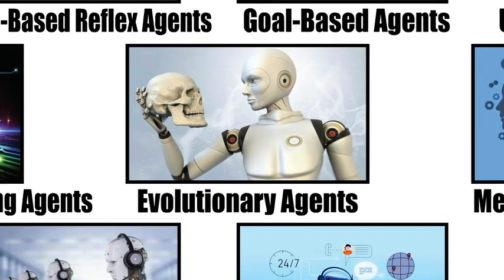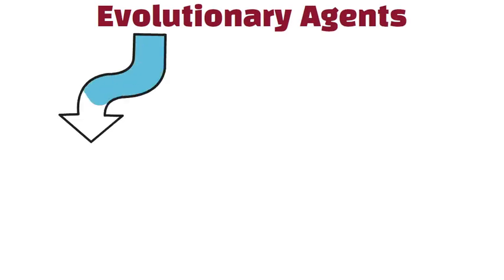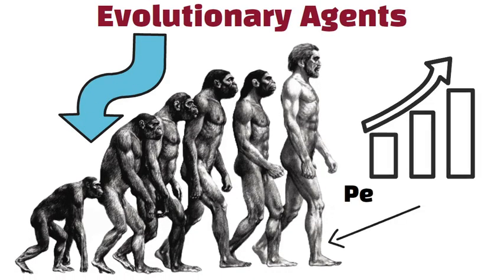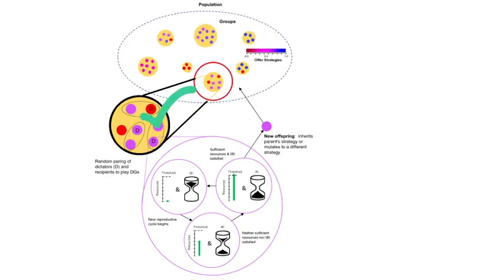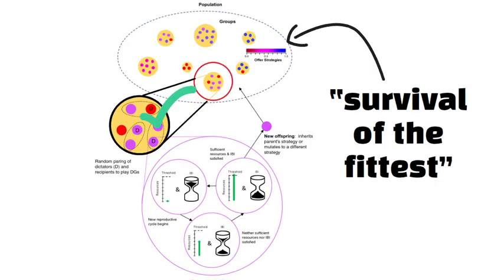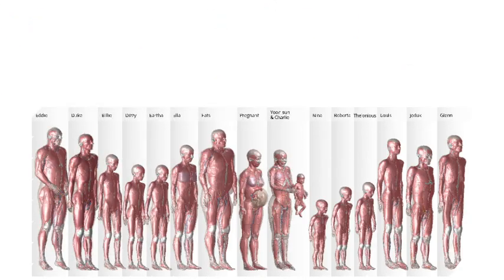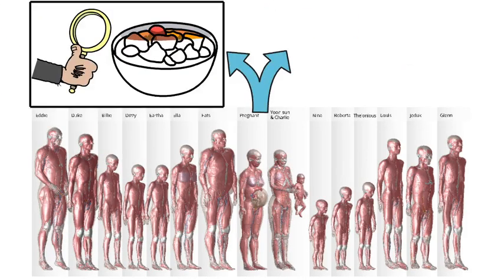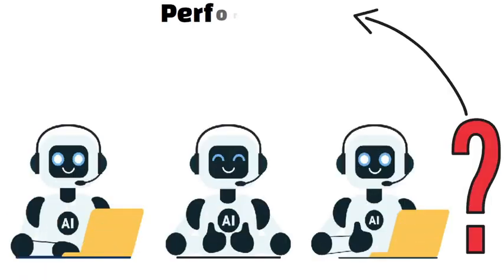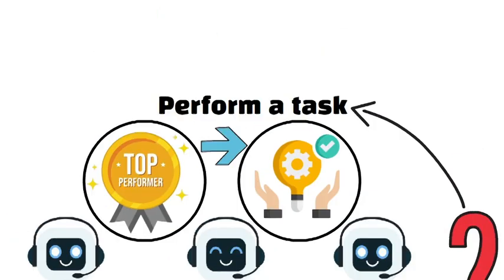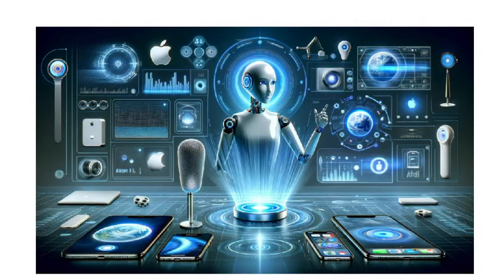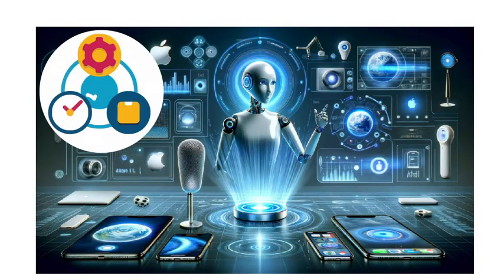Evolutionary agents use principles inspired by natural evolution to improve their performance. They start with a variety of strategies, then select and combine the best ones over multiple rounds of survival of the fittest. Picture a population of virtual creatures that adapt over time to better find food or avoid danger. In these systems, agents are evaluated on how well they perform a task, and the best performers have their strategies mixed and mutated to create a new generation of agents. Over time, this process leads to highly efficient behaviors that might be hard to design by hand.